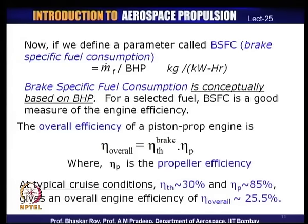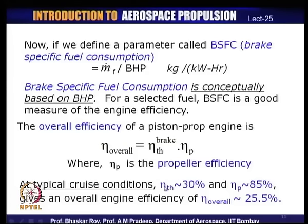The overall efficiency of the piston-propeller combination is given by: η_overall = brake thermal efficiency × η_p (propeller efficiency). Typically at cruise conditions, the brake thermal efficiency is of the order of 30%, the propeller aerodynamic efficiency around 85%, giving an overall thrust-producing efficiency of approximately 25.5%. This is the kind of overall efficiency with which the aircraft power plant functions.